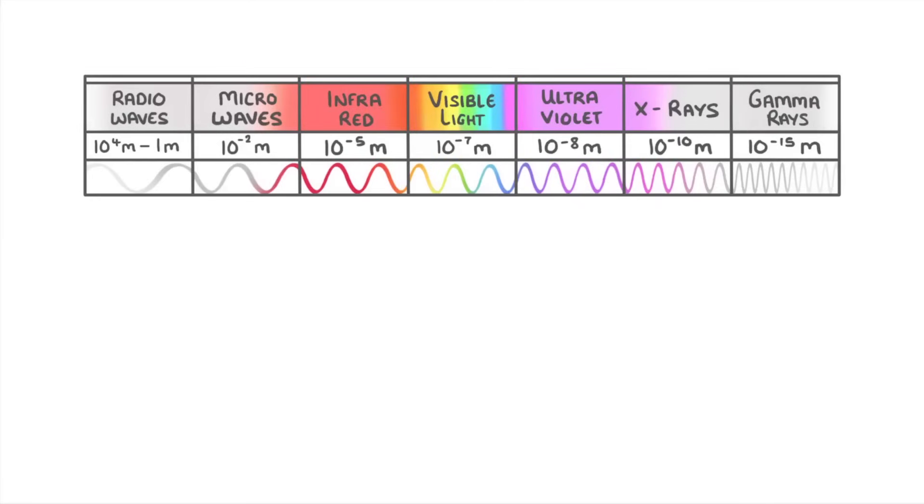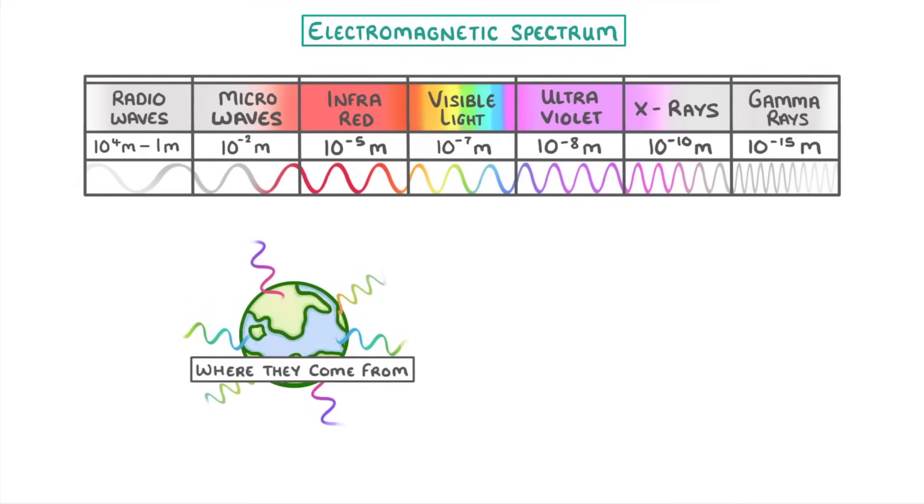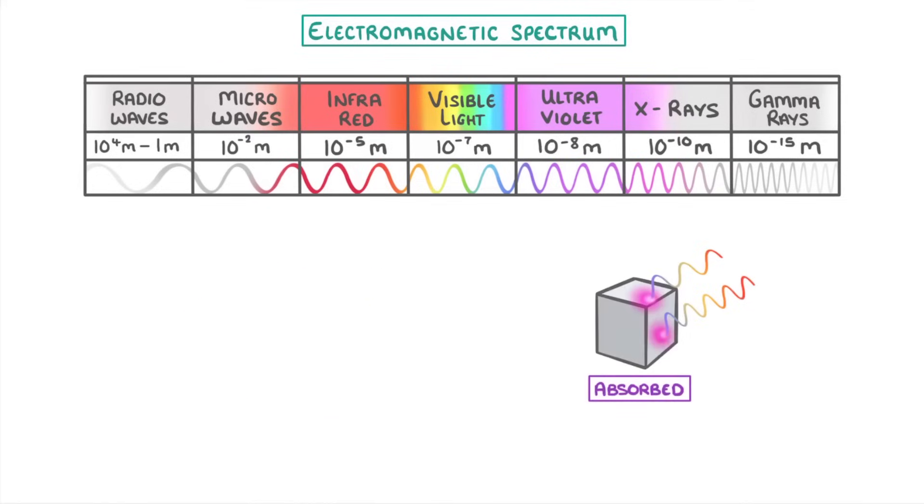In today's video, we're looking at the electromagnetic spectrum, which is the entire range of electromagnetic waves, and we'll cover both where they come from and what happens when they're absorbed. The first thing to know is that electromagnetic or EM waves are all transverse waves, which means they oscillate perpendicular to the direction of energy transfer.